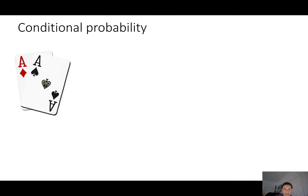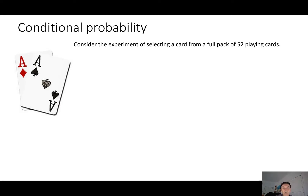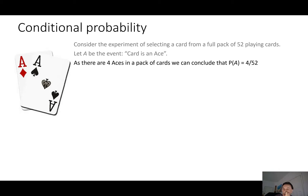In order to provide a formal, rigorous definition of independent events, we have to introduce the crucial notion of conditional probability, which is central to the Bayesian approach to probability. Consider the experiment of selecting a card from a full pack of 52 playing cards, and let A be the event that the card is an ace. Since there are four aces in a pack, the probability of A is 4 over 52.